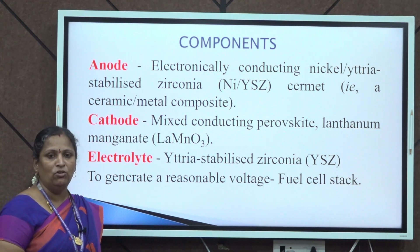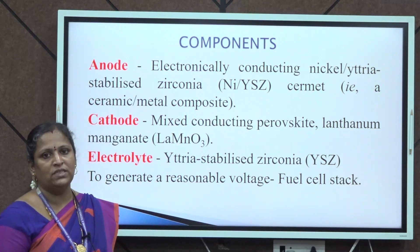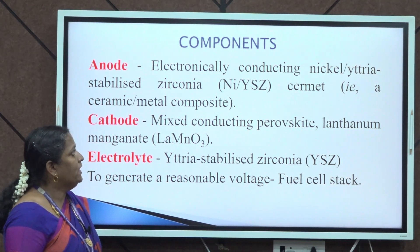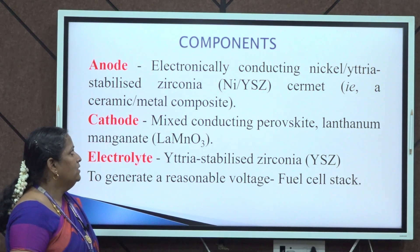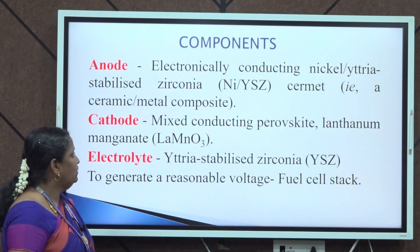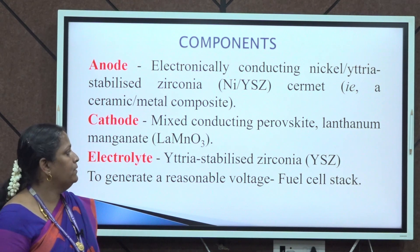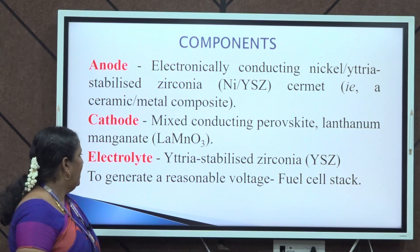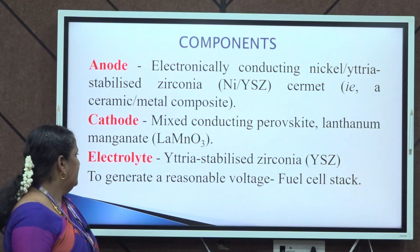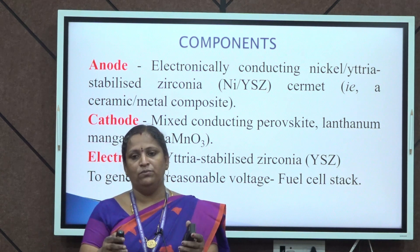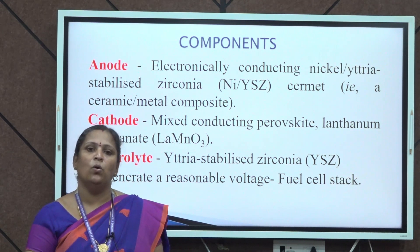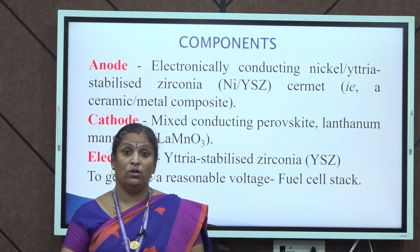Coming to the important components of solid oxide fuel cell: in the anode, we use electronically conducting nickel yttria-stabilized zirconia, otherwise called cermet — that is, a ceramic-metal composite material. In the cathode compartment, we use mixed ion and electron conducting material like perovskite, lanthanum manganite, etc. In the electrolyte, we use yttria-stabilized zirconia, abbreviated as YSZ. By sandwiching the electrolyte between the 2 electrodes, we have a single fuel cell. To have a reasonable voltage, we can connect them in series — that is called the fuel cell stack.